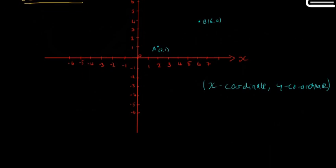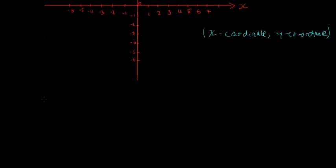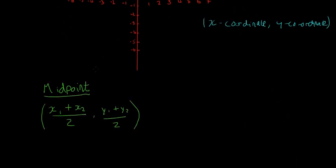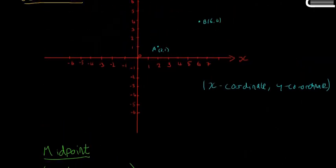First we're going to look at the midpoint formula. The midpoint formula is given below: (x₁ + x₂)/2, (y₁ + y₂)/2. So the midpoint between A and B here would be this point C, obviously in the middle of the two of them.